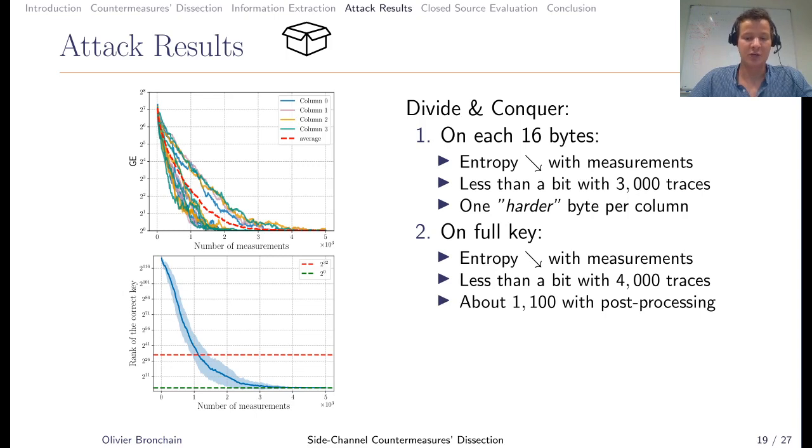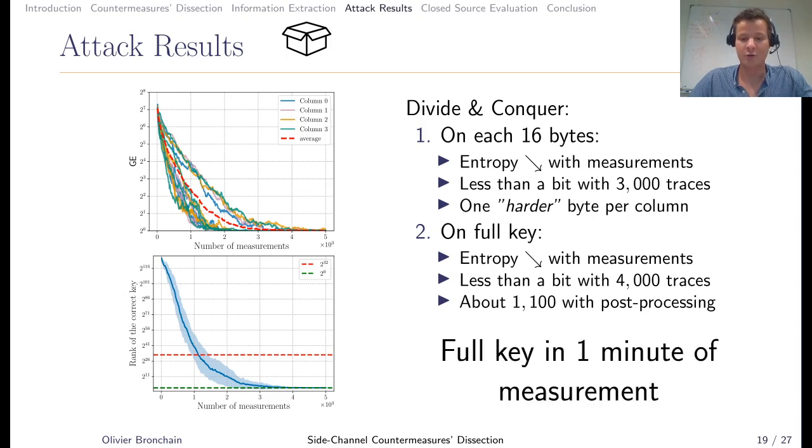If you can do key enumeration, you can do post-processing and get the key with 1,100 measurements. Overall, you can just let your scope run for one minute and you will have enough data to attack.